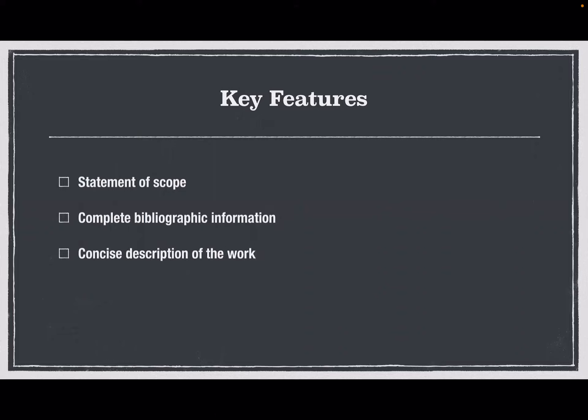Another key feature is to have a concise description of the work. A good annotation describes each item as carefully and objectively as possible, giving accurate information and showing that you understand the source. However, it should be brief. You don't want to go into a ton of detail, but you want to write enough to give the reader a clear idea of what the source is about.